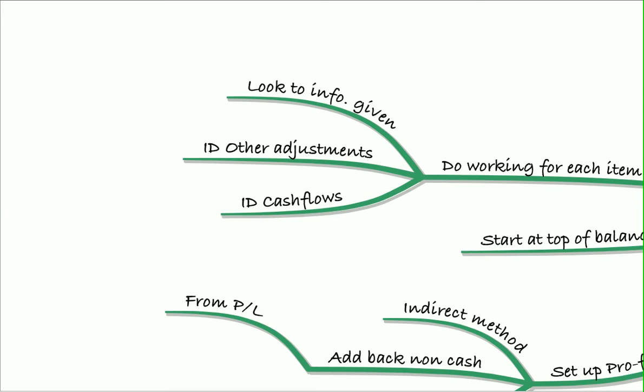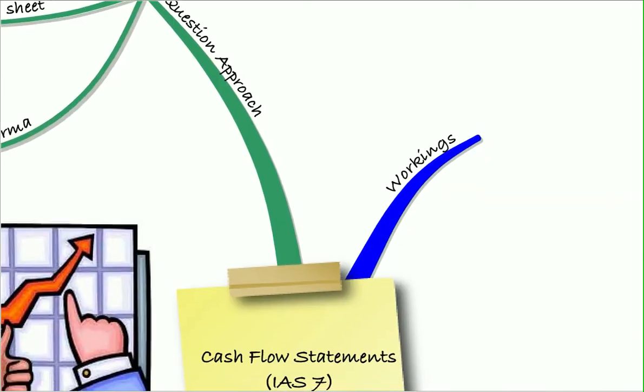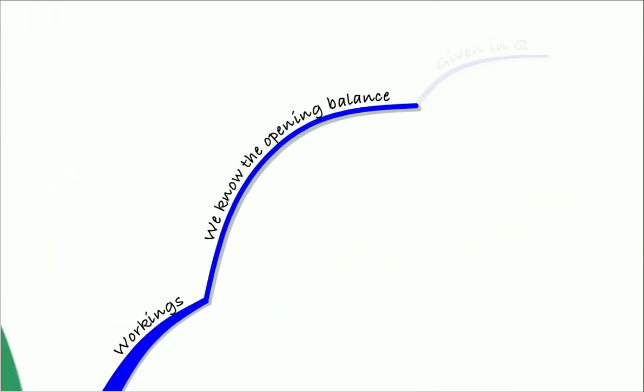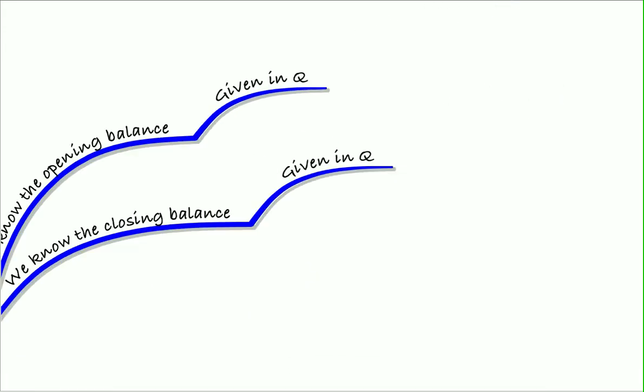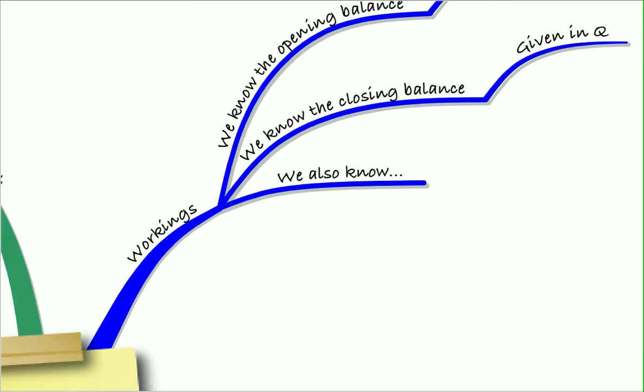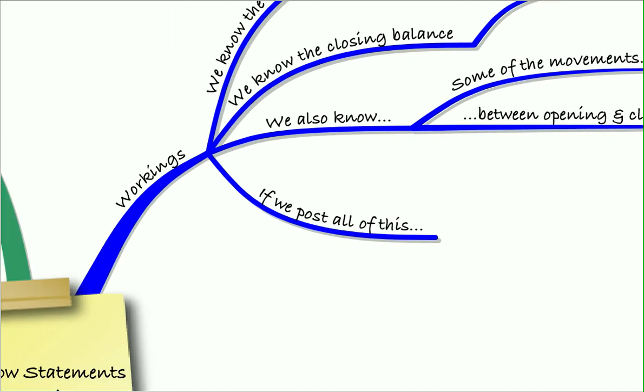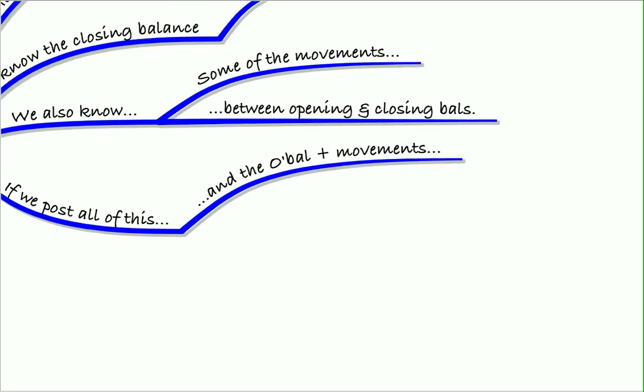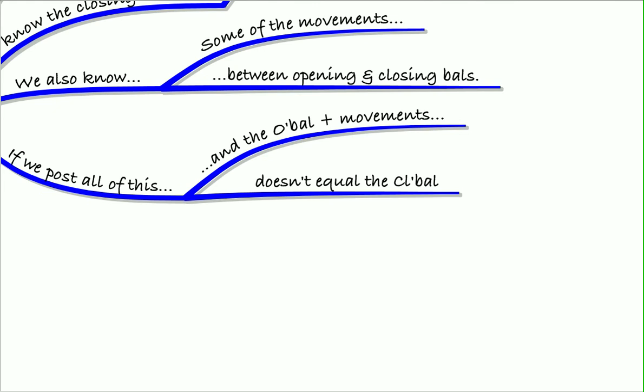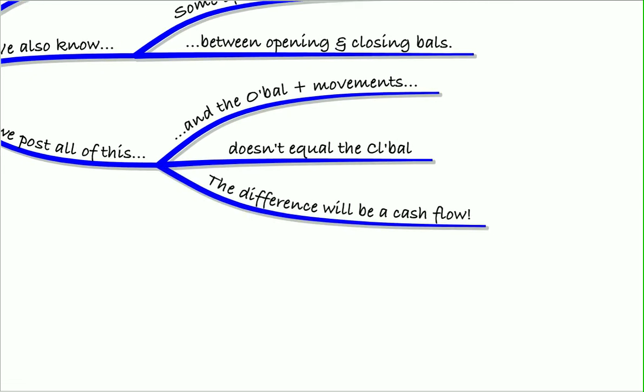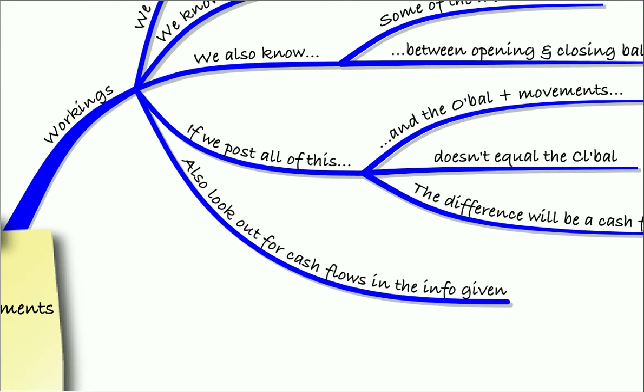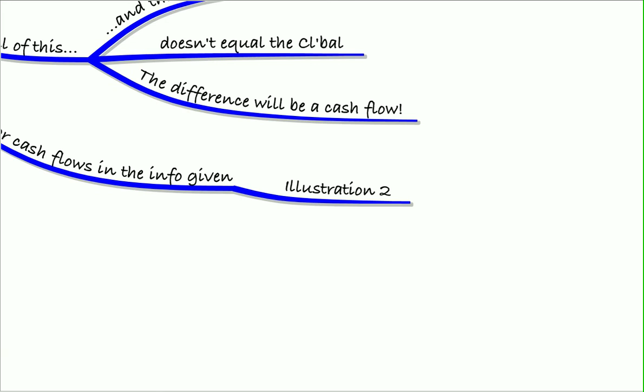When it comes to these workings, remember you'll be given the opening balance in the question, and you also know the closing balance. You know some of the movements between the opening and closing balances from the notes in the question. If you post all of that information and the opening balance plus the movements doesn't equal the closing balance, then the difference will be your cash flow—the bit you're looking for to bring into your cash flow statement. You also need to look for any other cash flows, for example, like the purchase or sale of fixed assets. We did illustration two that showed exactly how to do your workings for a cash flow statement.